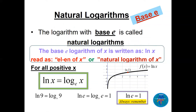When the base is e, we call it natural logarithms. We write log base e of x as ln(x) — you will never see 'log base e' in calculators, books, or exams; always use ln. So ln(x) is the same as log base e of x. What is ln(e)? It equals 1, because the base and argument are the same. We will see more properties in the next lecture.